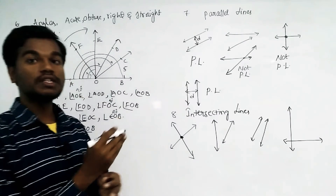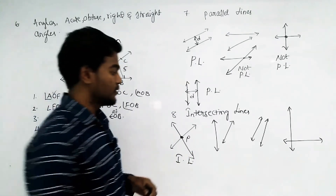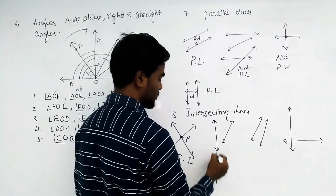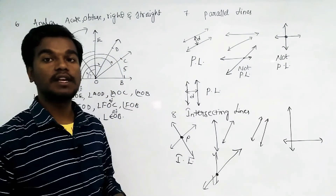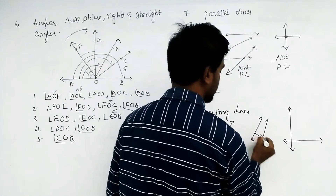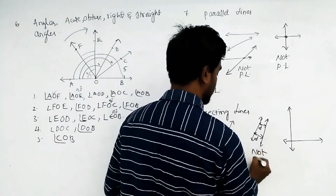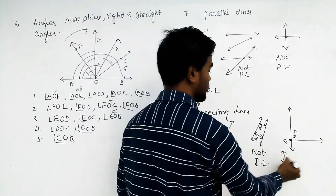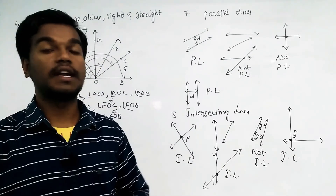For intersecting lines: lines that touch each other at a point are intersecting lines. The first figure shows lines intersecting at point P. The second figure may also intersect — by extending the second line, we can find the intersection point. The third figure shows non-intersecting lines because the distance between them is always the same. The fourth figure shows intersecting lines at point X.